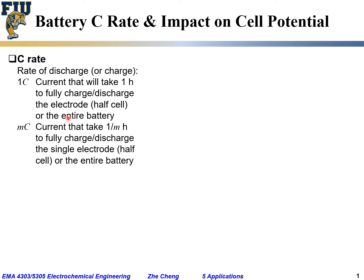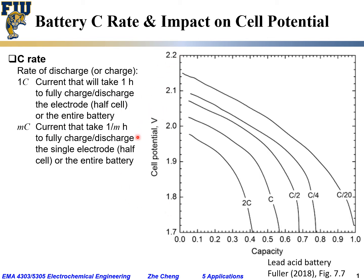C-rate is very important for battery performance. Here we show the cell potential versus capacity at different charge-discharge C-rates, shown for a lead-acid battery. The equilibrium voltage is around 2.05–2.1 volts. As you can see, the C-rates shown are C/20, C/4, C/2, C, and 2C. C/20 is the slowest C-rate, meaning m = 1/20, or it will take 20 hours to fully discharge the battery. On the other hand, 2C means m = 2, and it will take half an hour or 30 minutes to fully charge or discharge this battery.